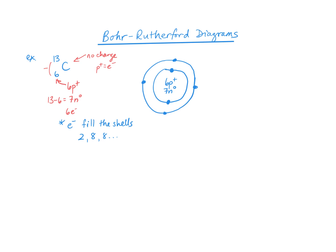Let's try another one. We've got sodium here with a mass of 23. You can pause the video and see if you can list your protons, neutrons, and electrons, and then try drawing your protons and neutrons in the middle and showing the orbits with the electrons.